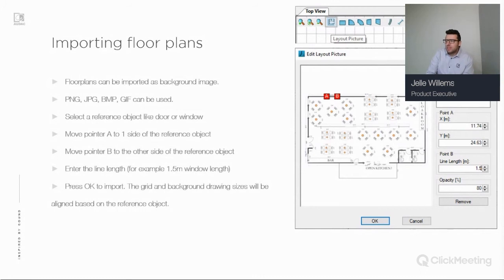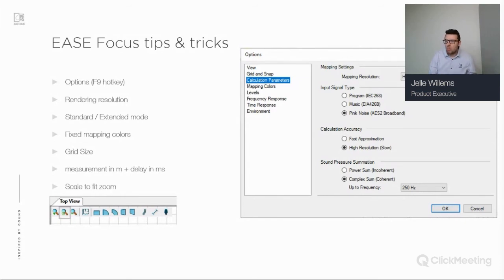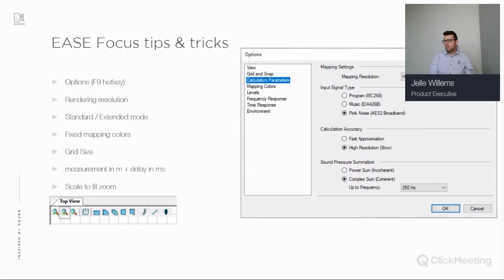Now for some EASE Focus tips and tricks. One of the first: to go to your options, use the F9 hotkey. It's worth going into options as you can change some important settings. One key setting is the mapping resolution — it controls how detailed the calculations of your speakers will be. It's set to high here. The higher the value, the more time it takes but the more detailed the calculations.